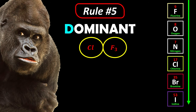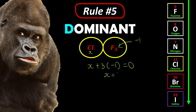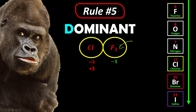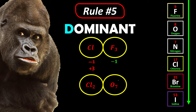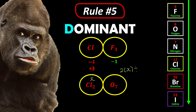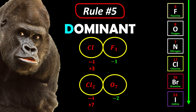For example, ClF3: fluorine is the most dominant and always −1, so chlorine is X. X + 3(−1) = 0, giving chlorine = +3. For Cl2O7: oxygen is more electronegative than chlorine, so chlorine gives way. 2X + 7(−2) = 0, giving X = +7. So chlorine instead of −1 becomes +7 because oxygen is more dominant.